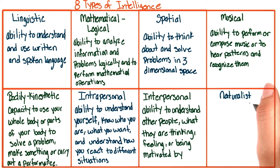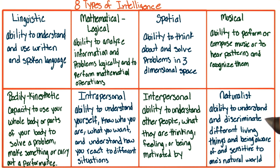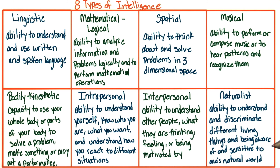And finally, naturalist intelligence. This is having the ability to understand and discriminate different living things, such as plants and animals, and being aware and sensitive to one's natural world.